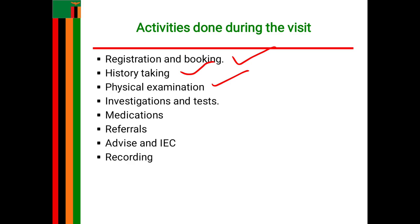You examine the nose for polyps, discharge, or bleeding. You examine the ears for polyps or discharge. For the mouth, you look at signs of anaemia — whether the lips are dry or bluish — the mucous membranes, the tongue, oral infections, oral thrush, sores, and dental caries.